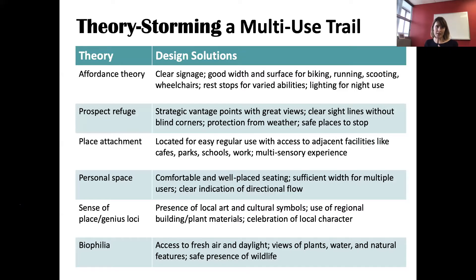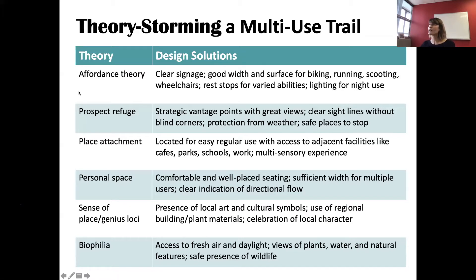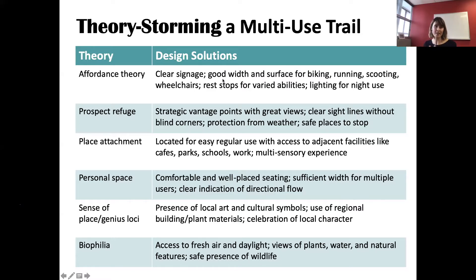Here's the theory storming table: you take each of the six theories and look at how each would result in a different design solution. For affordance theory — opportunities for action and visual cues — you think about clear signage for wayfinding, appropriate pathway width and surface material. A gravel or dirt path might not be conducive to certain activities, so surface choice signals which activities are afforded.